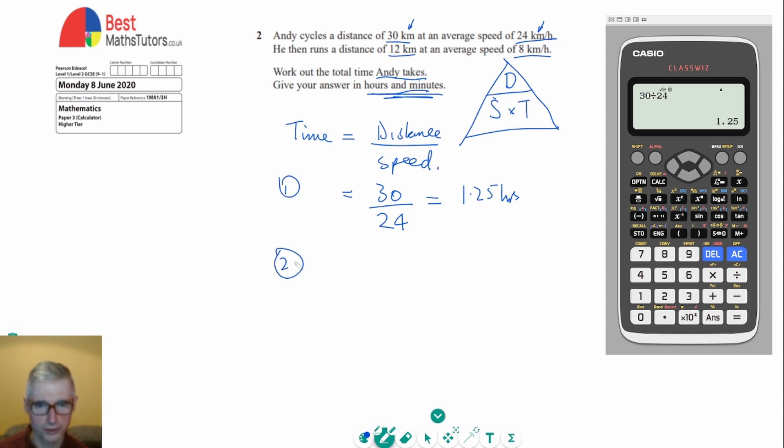For the second part of his journey, he does 12 kilometers at a speed of 8 kilometers per hour. We'll work that out on the calculator as well. We get 3 over 2, which using the SD button gives 1.5 hours. The total time can be found by adding them together.